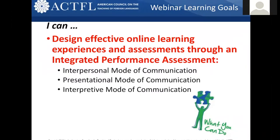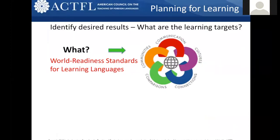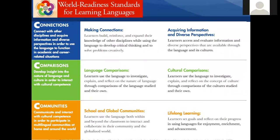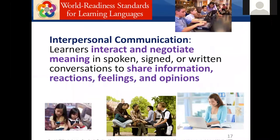The World Readiness Standards are basically the 'what' — where we're going to start our planning. We have five goal areas: communication (moving between interpersonal, interpretive, and presentational), cultures, connections, comparisons, and communities. In all of these goal areas, learners are using the language to investigate, to build or access and evaluate information. Interpersonal communication is when learners are interacting and negotiating meaning in spoken, signed, or written conversations to share information, reactions, feelings, and opinions.